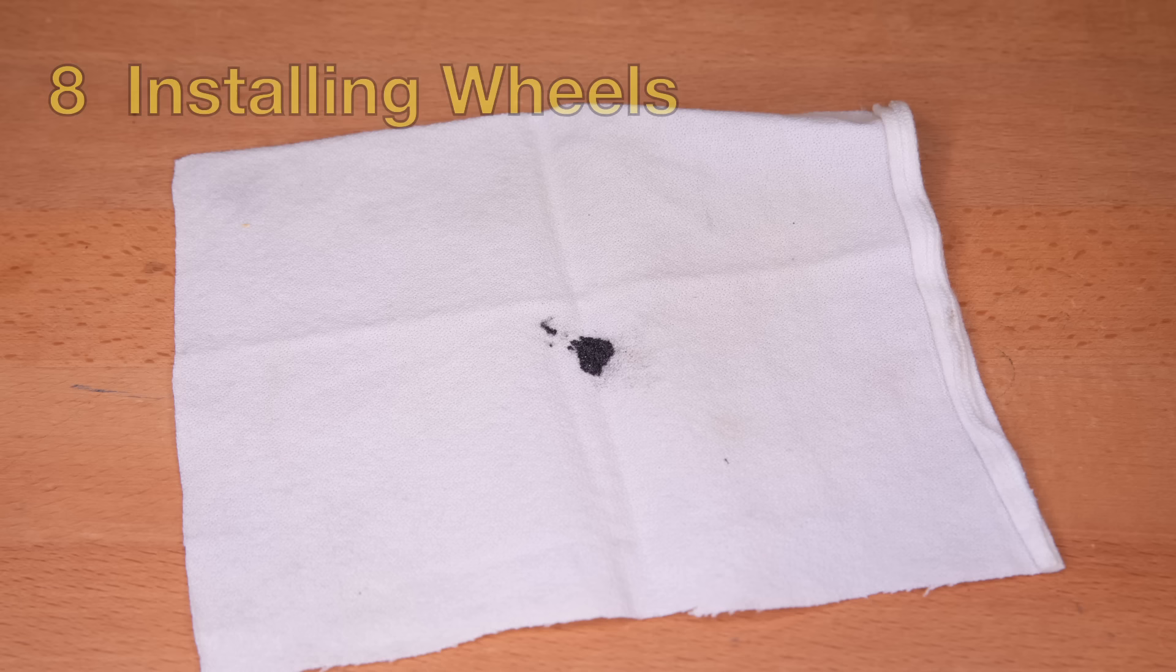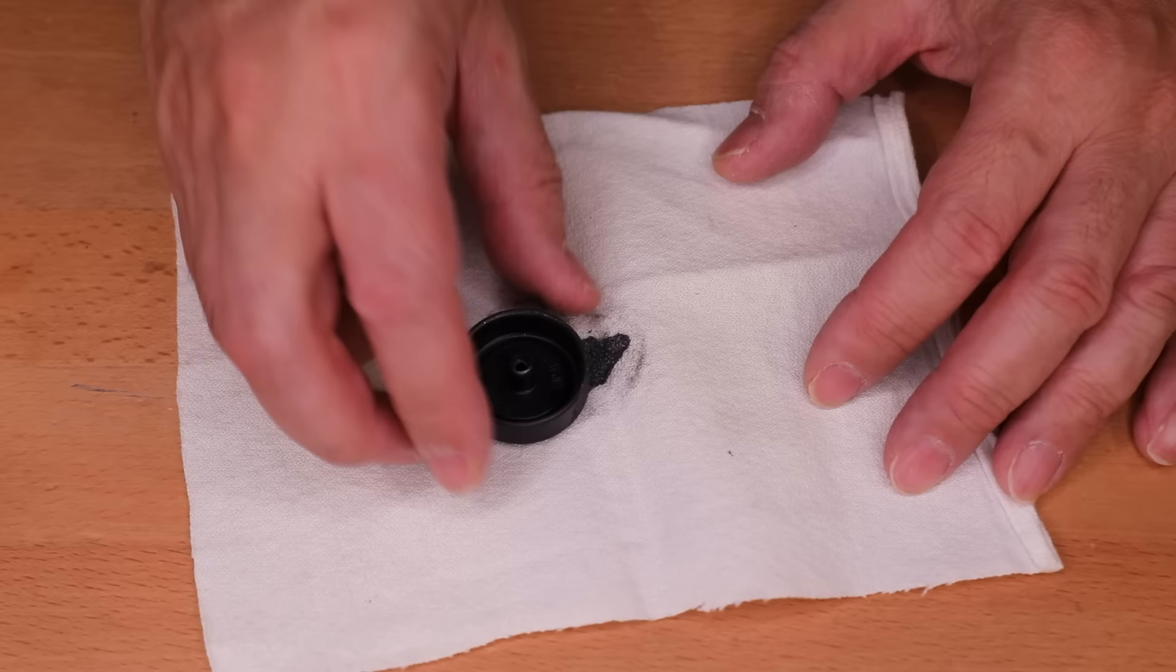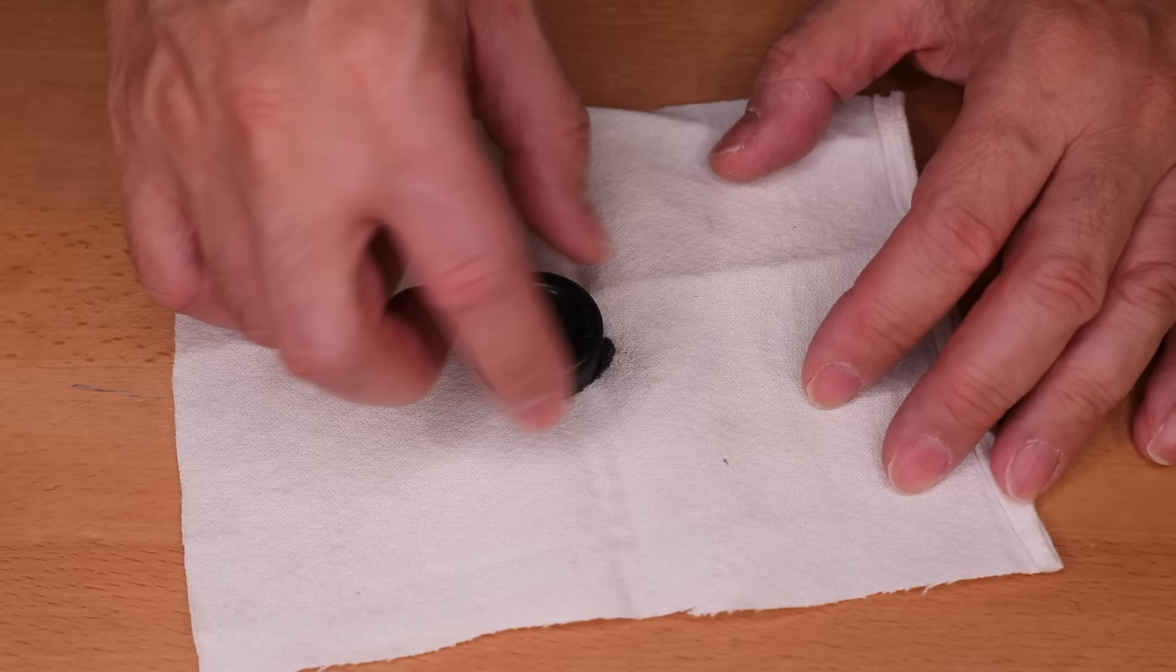Use graphite lubricant to prepare the wheels. Put some graphite on a clean cloth and rub the graphite on the wheel treads. Also rub graphite on the inside of the wheel, and around each axle hole of the car.